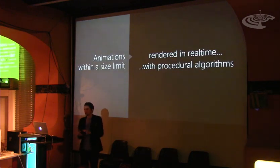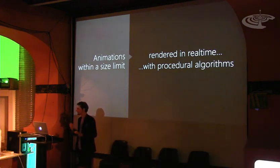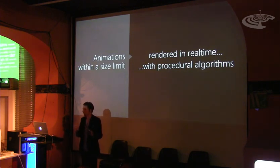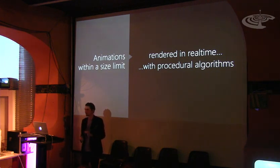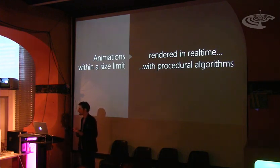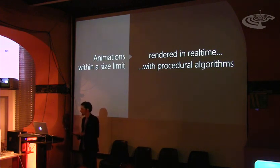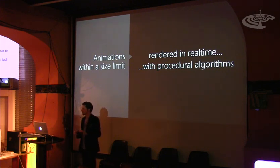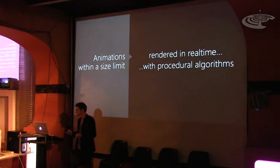Essentially, the main categories are about doing animations within a size limit — impressing the audience within about three minutes. It must be really kick-ass: nice music, nice graphics, and nice code. But it must be within a size limit, so you can't just submit a pre-rendered movie. It needs to be rendered on the fly, just like a gaming engine. And normally, to squeeze it within the size limit, you need some kind of procedural algorithms, which I will explain a little bit later.